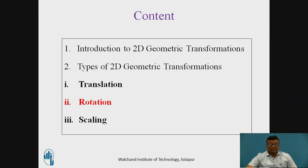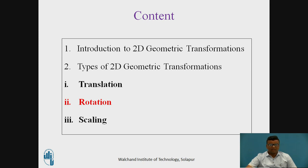These are the contents. First, we will discuss what is meant by 2D geometrical transformations and why it is needed. After that, we will see what are the different types of 2D geometrical transformations — that is, translation, rotation, and scaling — and also the equations for translation, rotation, and scaling.